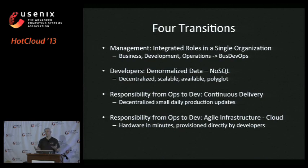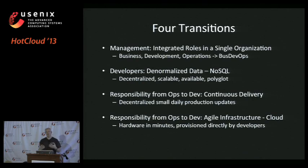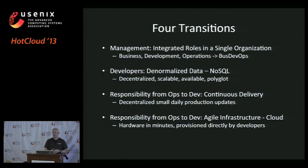When you want hardware, you just provision it directly — it takes minutes. So the four transitions are: getting management to coordinate everything; wrapping your head around how to build denormalized data stores — different skill set but not that hard, just unfamiliar; moving independently with continuous delivery; and cloud deployment with self-service hardware provisioning.